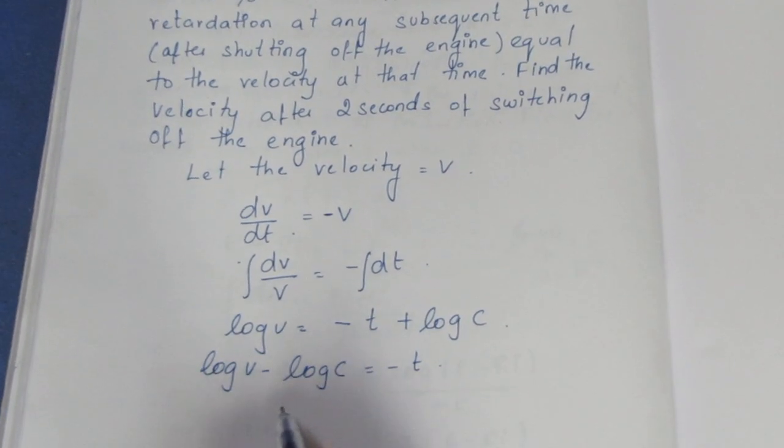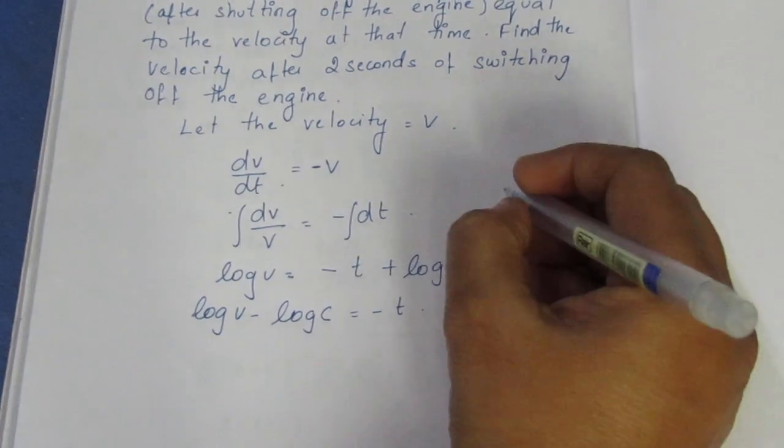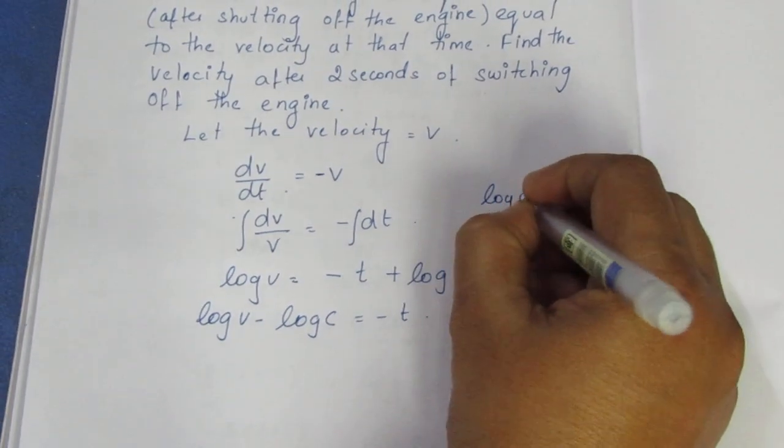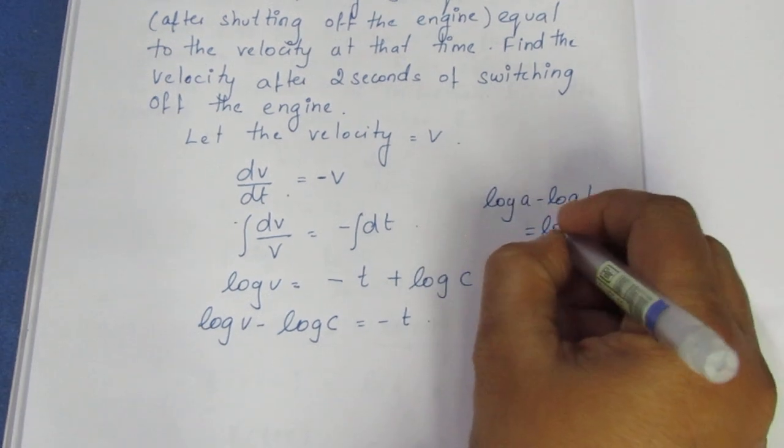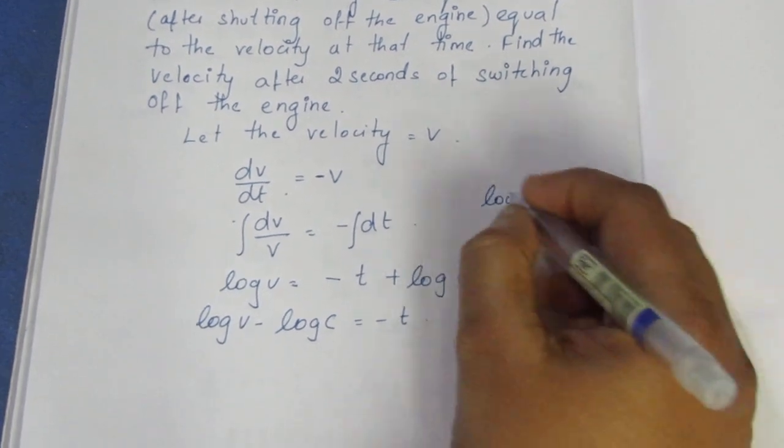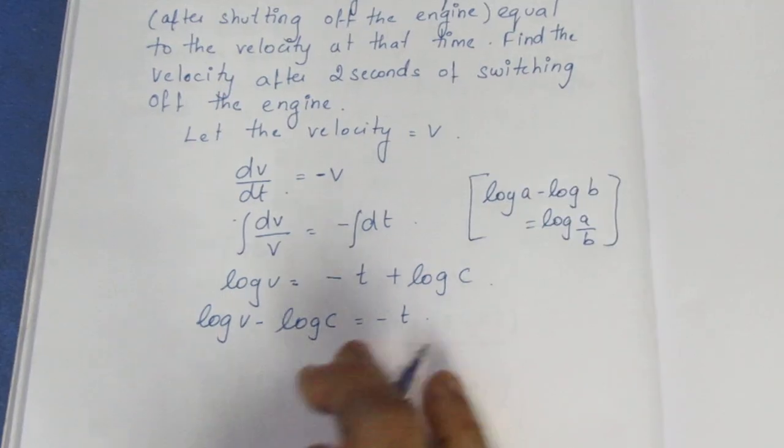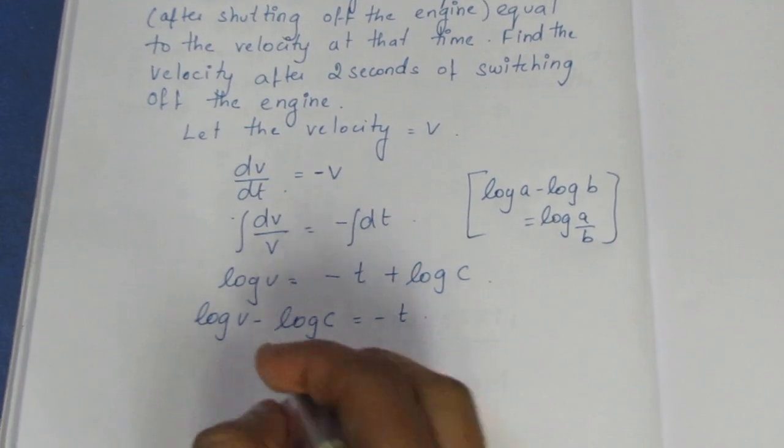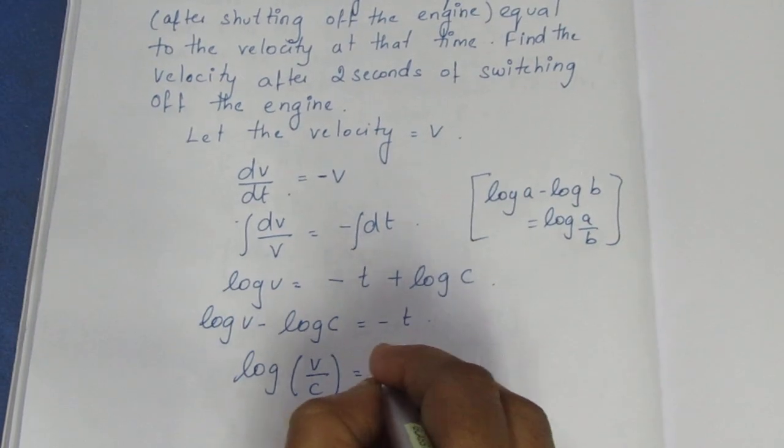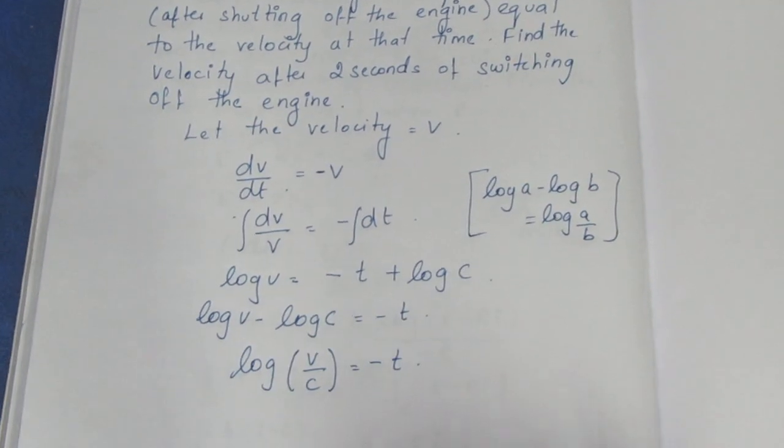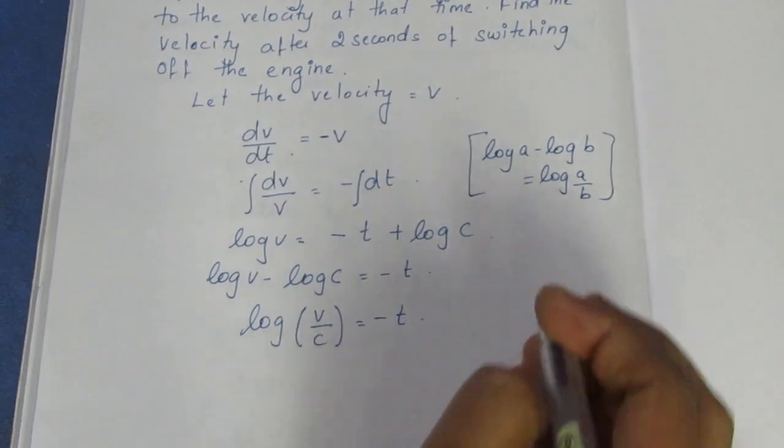So log v minus log c equals minus t. Using the logarithm property, log a minus log b equals log a by b, we get log of v by c equals minus t.